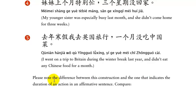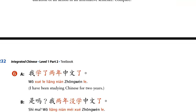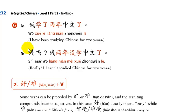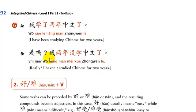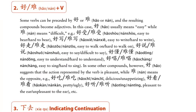Now please note the difference between this construction and the one that indicates the duration of an action in the affirmative. These examples are all about things that did not happen for a certain period. But here we have: I have been studying Chinese for two years — 我学了两年中文了. Notice: 我, then immediately the verb 学, then 了, then the time element 两年. No 没, and the time element comes after the verb.